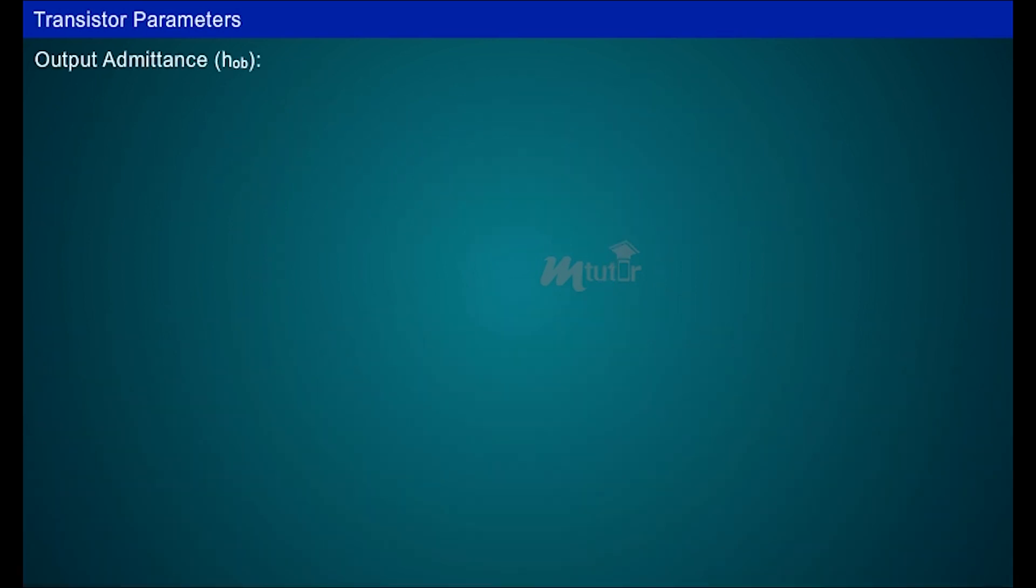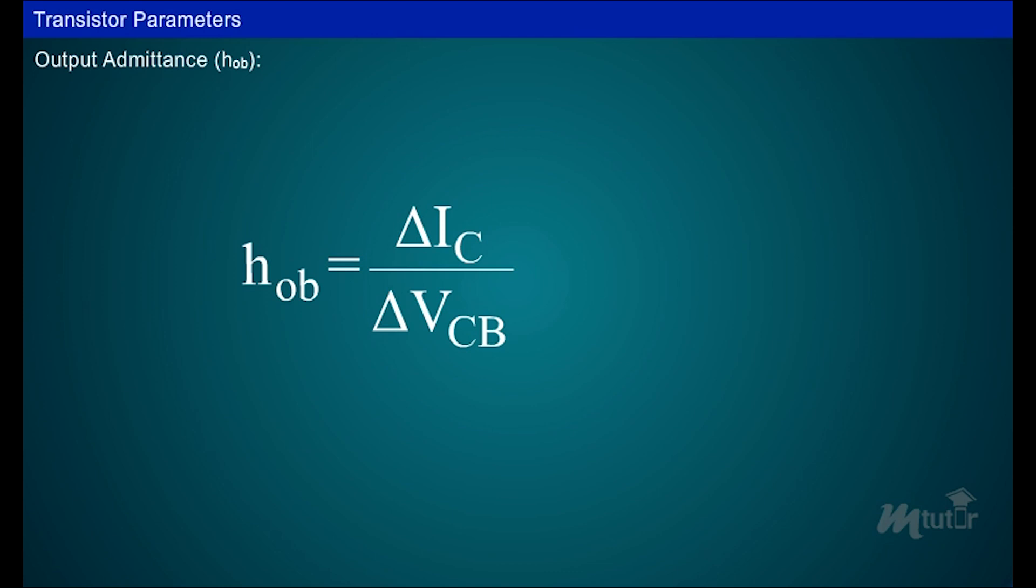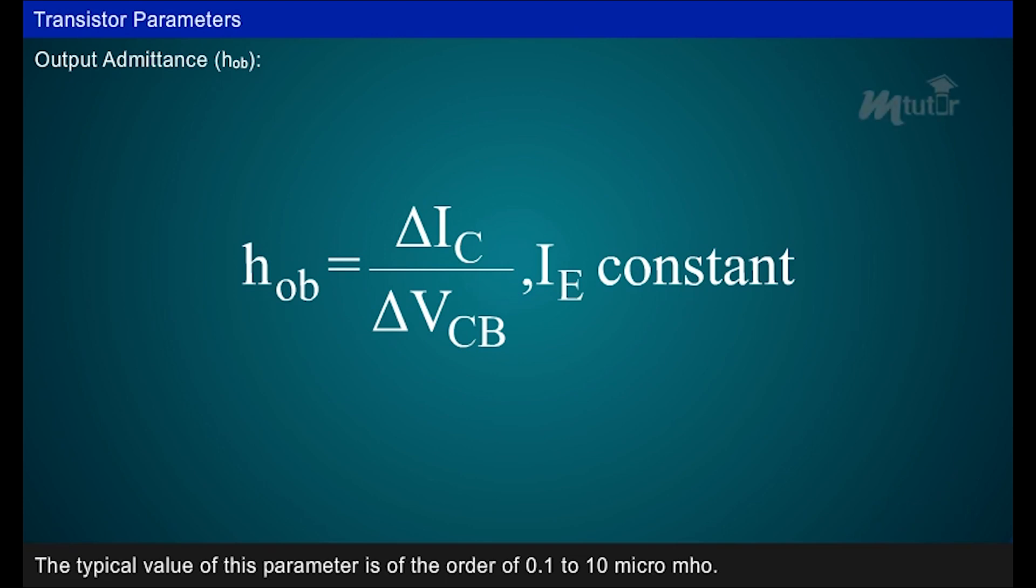Output admittance, HOB, is the ratio of change in the collector current to the corresponding change in the collector voltage with the emitter current, IE, kept constant. The typical value of this parameter is in the order of 0.1 to 10 micromho.